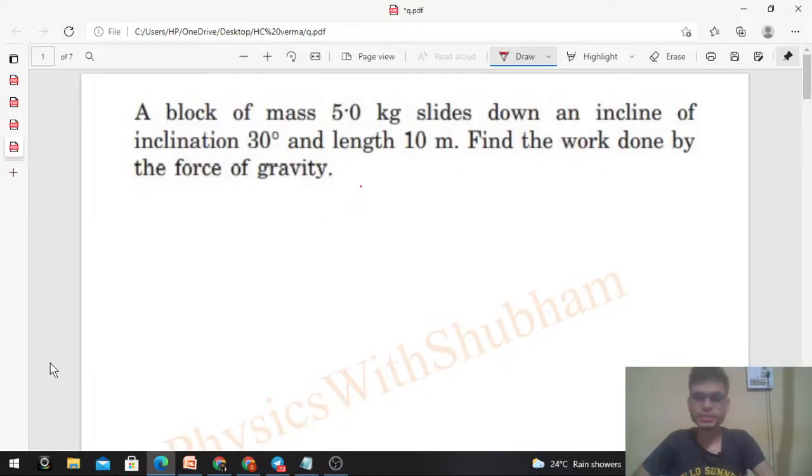Okay hi everyone, so today let's discuss this interesting problem. It says a block of mass 5 kilogram slides down an incline of inclination 30 degrees and length 10 meters. Find the work done by the force of gravity.